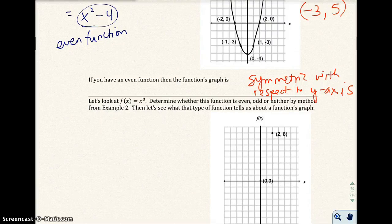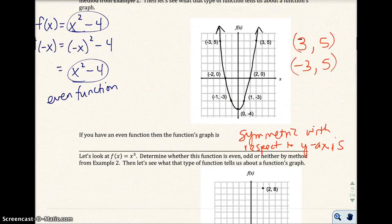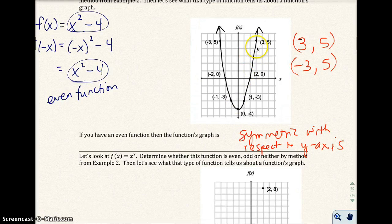My last video got cut off, so I'm going to finish the statement. If you have an even function, then the function's graph is symmetric with respect to the y-axis. Symmetric just means it's a mirror across the y-axis, so this part of the graph is a mirror of the other side across the y-axis.